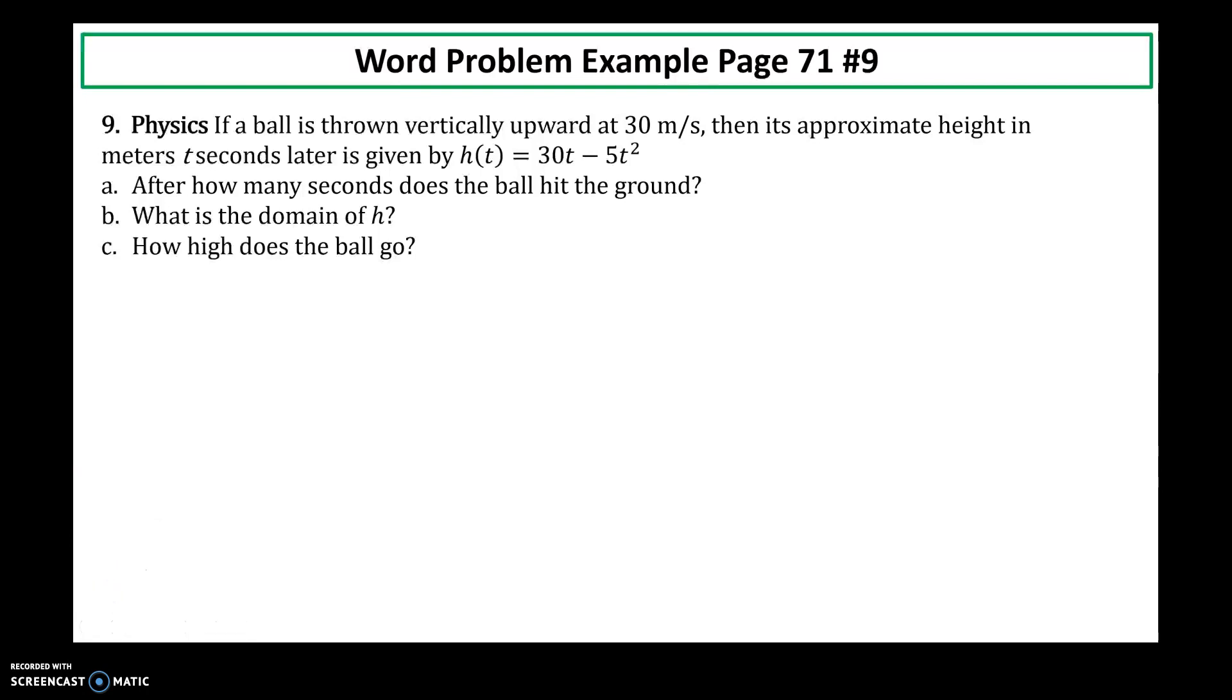Next, if a ball is thrown vertically upward at 30 meters per second, then its approximate height in meters t seconds later is given by this function. So all of the information has been substituted for you. So we're just going to focus on this. Part a. After how many seconds does the ball hit the ground?